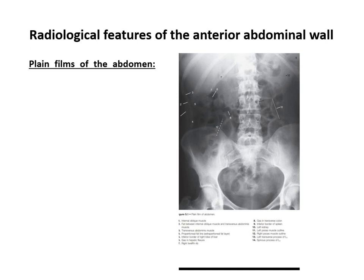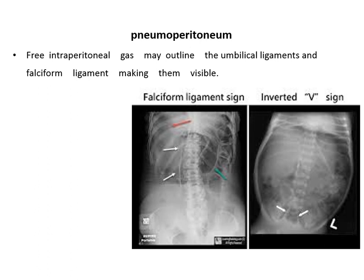The ascending and transverse colon and splenic flexure are visible. In case of IVU when we give contrast, we sometimes see the rugae of the stomach enhanced and shouldn't mistake it with an adrenal or renal mass. In case of pneumoperitoneum, the free intra-abdominal gas may outline the umbilical arteries — the medial umbilical ligaments — creating what is called the inverted V sign. Gas may also outline the falciform ligament, called the falciform ligament sign. This falciform ligament attaches the anterior surface of the liver to the anterior abdominal wall.